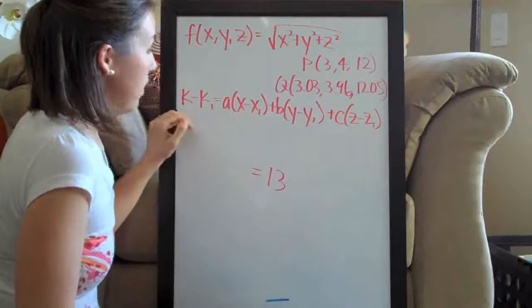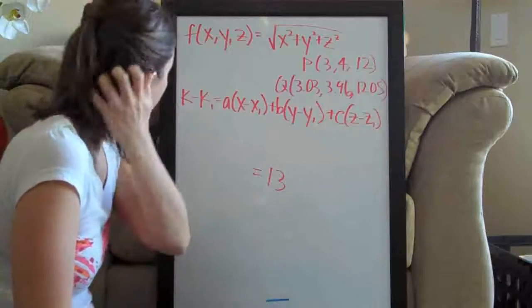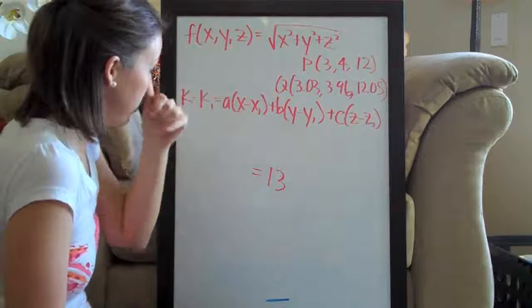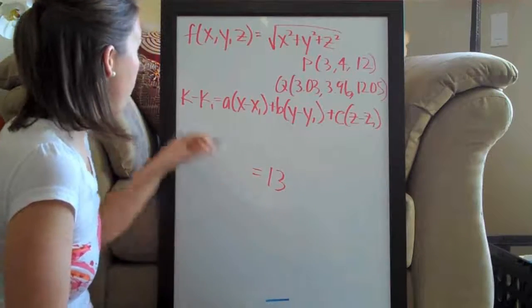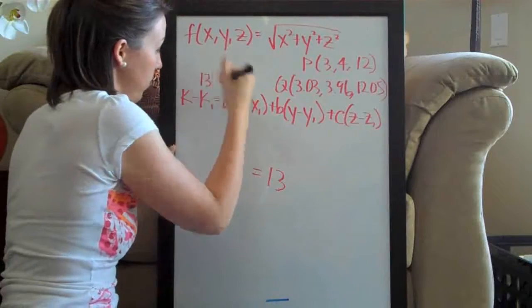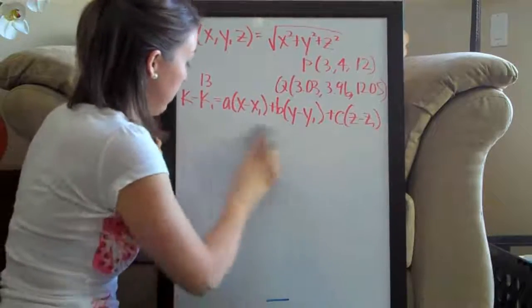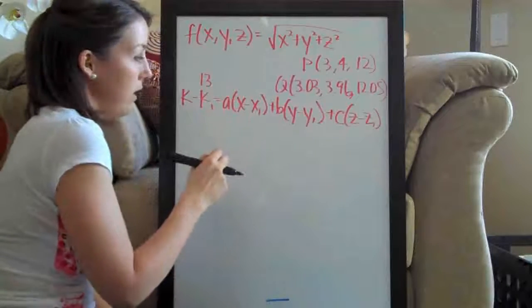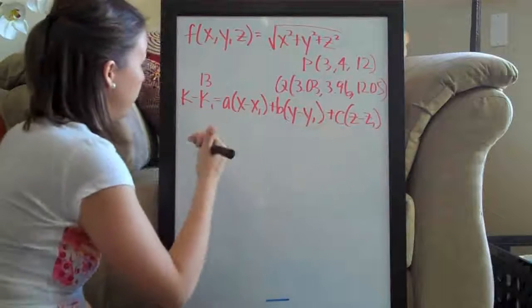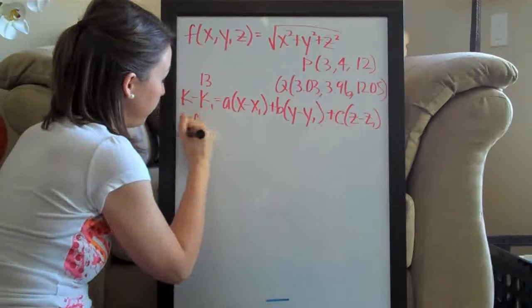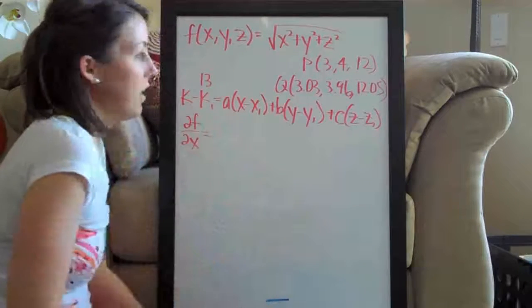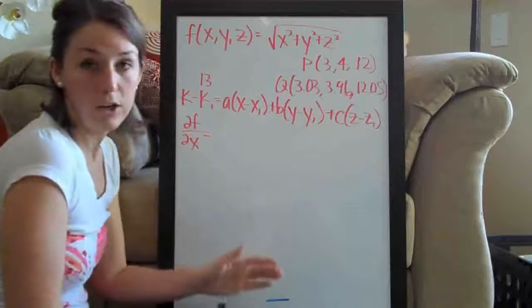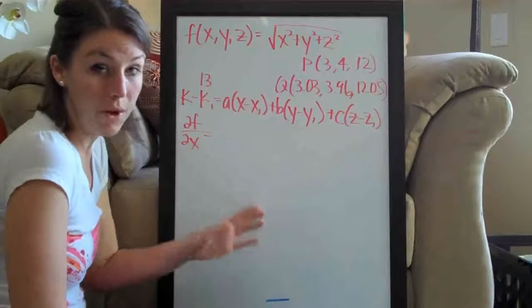So we need to find all of the values in this equation. When we plugged in the original point to the original function and got 13, that was k1. So that's the first thing we do. The next thing we do is take the partial derivatives of this function — eventually we're going to solve for a, b, and c. So let's take the partial derivative with respect to x. If you need any help with partial derivatives, please go to the partial derivatives section of my website. Here we're going to be focusing on linear approximation.